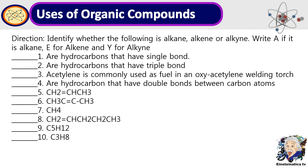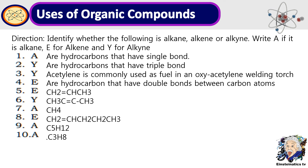Now for the last quiz, you are only going to identify whether the following examples are alkane, alkene, or alkyne. You are going to write A if it is an alkane, E for alkene, and Y for alkyne. Ito nga pala yung correct responses — tama ba lahat? Kung tama lahat, congratulations! Kung hindi naman, you may review again the video so that you will get a perfect score.